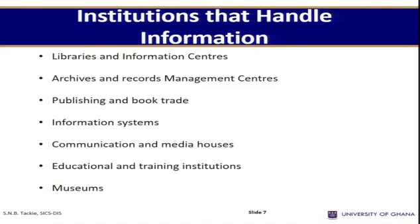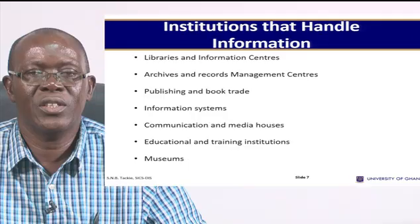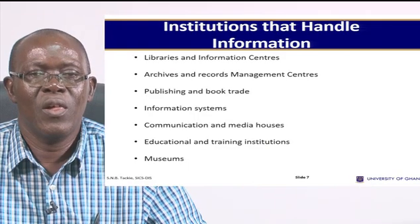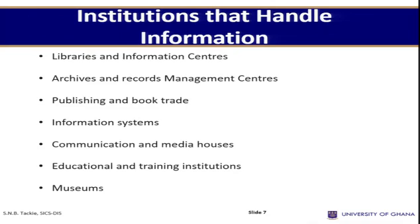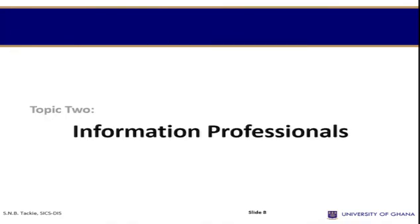Information infrastructure institutions include libraries and information centers, archives and records management centers, publishing and book trade, information systems, communication and media houses, educational and training institutions, and museums.